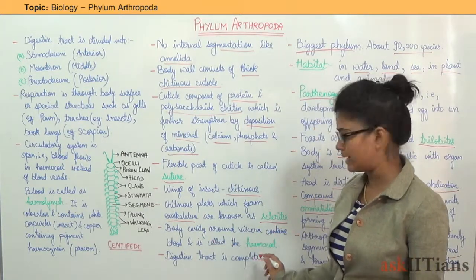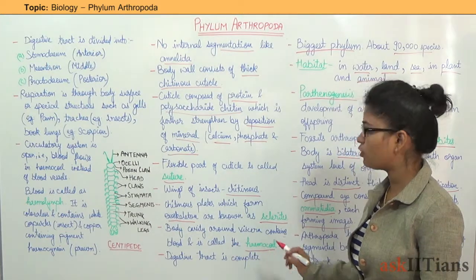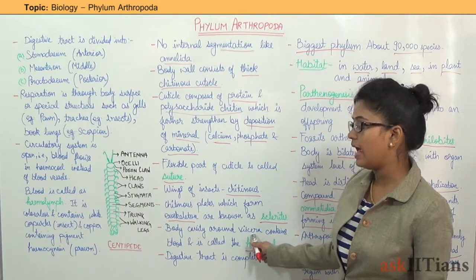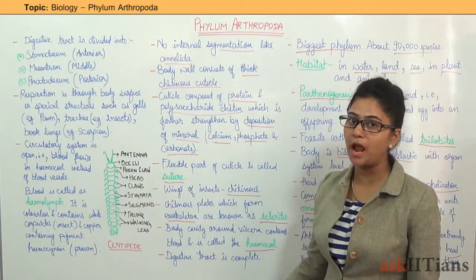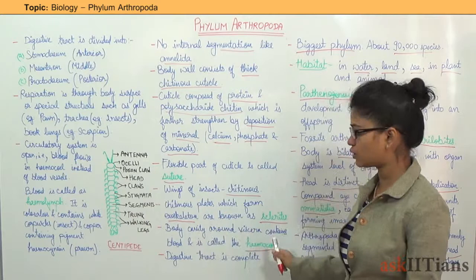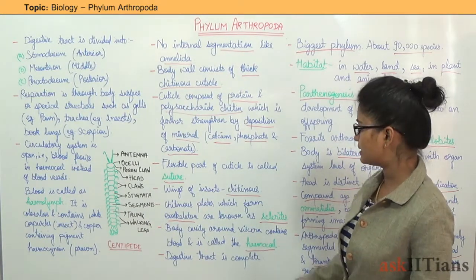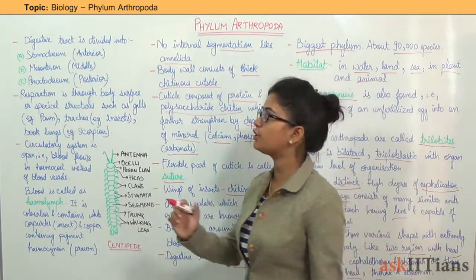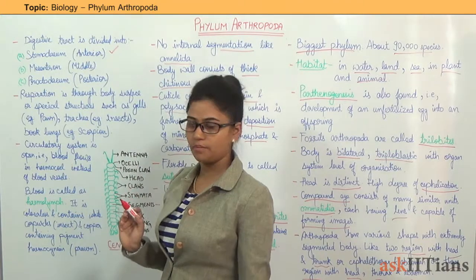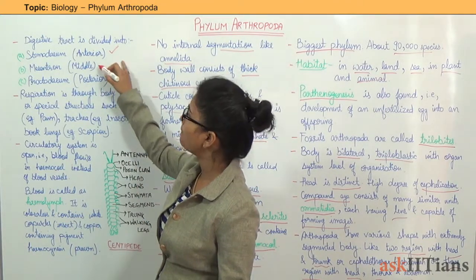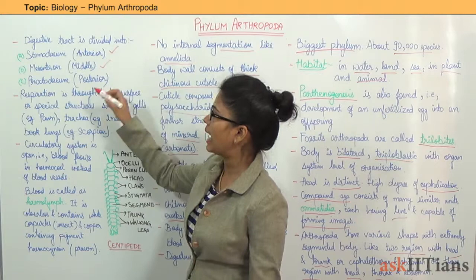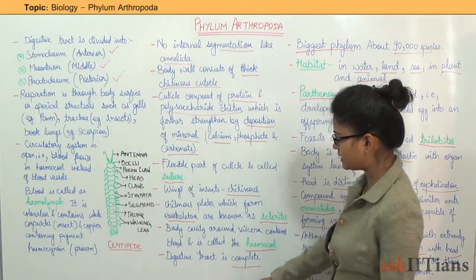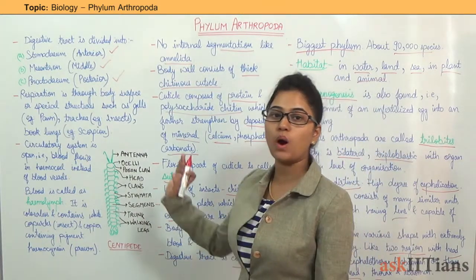The body cavity is present around the viscera and it is known as hemocele — this body cavity contains blood. The digestive tract is complete and is divided into three parts: stomodeum (anterior), mesenteron (middle), and proctodeum (posterior).